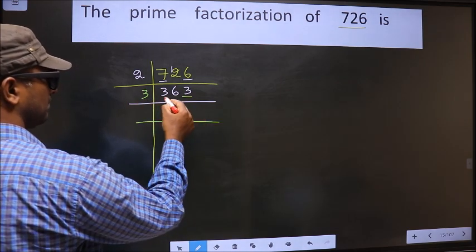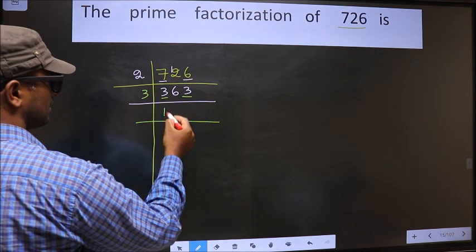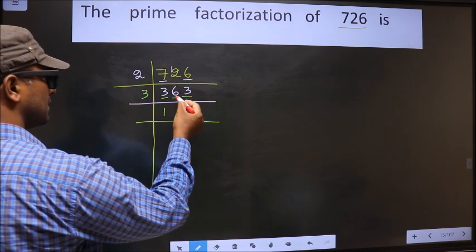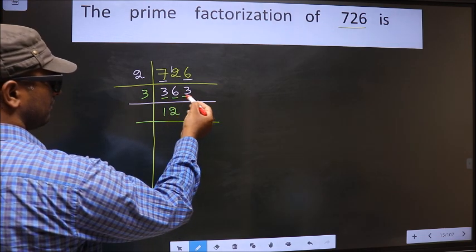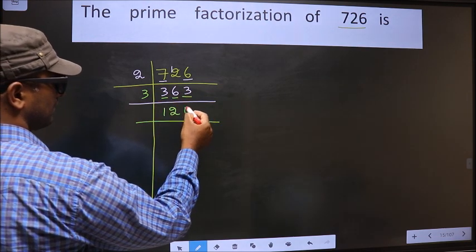The first number is 3. When do we get 3 in the 3 table? 3×1=3. The other number 6. When do we get 6 in the 3 table? 3×2=6. The other number 3. When do we get 3 in the 3 table? 3×1=3.